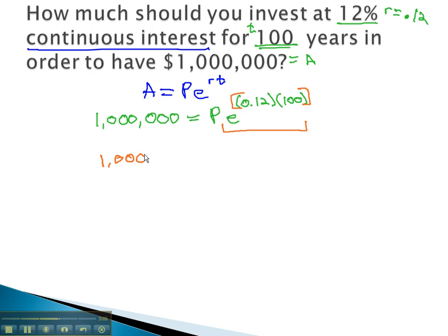We end up with 1,000,000 equals 162,754.791419 times the principle.